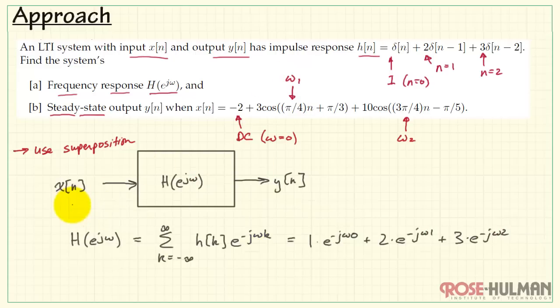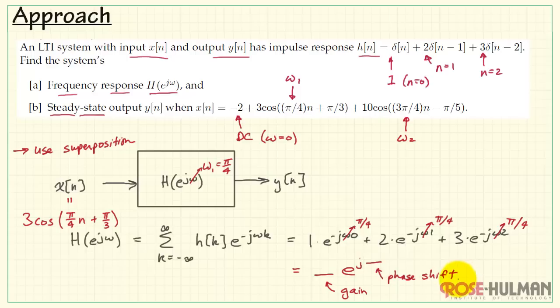Now, in a similar way, we can apply the sinusoidal input for frequency pi over 4. This means we evaluate the frequency response at this particular frequency, pi over 4. Every place that we see an omega, we drop in pi over 4. We can then evaluate this to some complex value, and it will have an amplitude and a phase. The amplitude of that complex value amounts to the gain, and the phase is the phase shift applied to the input sinusoid. Let me call these G and P.